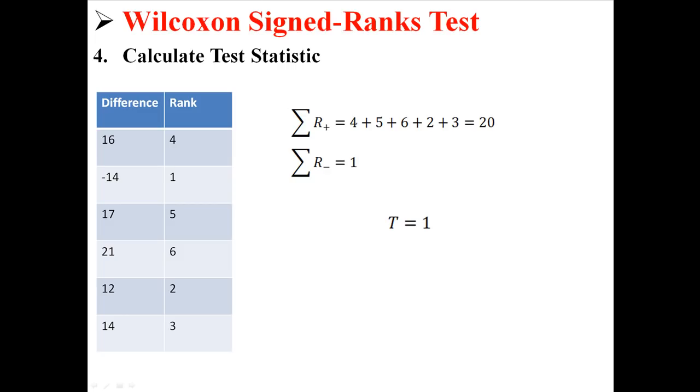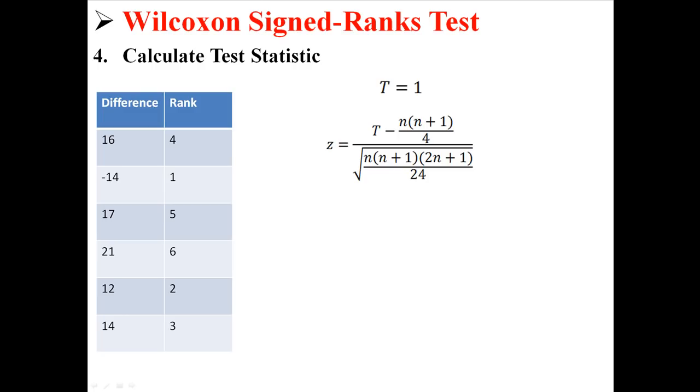Now we're going to use this t to calculate our z. This equation is actually pretty easy. All we need is t and n. Our t is 1 and our n is 6 because we have 6 people. So we just put all that in there. If you have a calculator you work through that. It's not too bad. You actually find a z of negative 1.99.